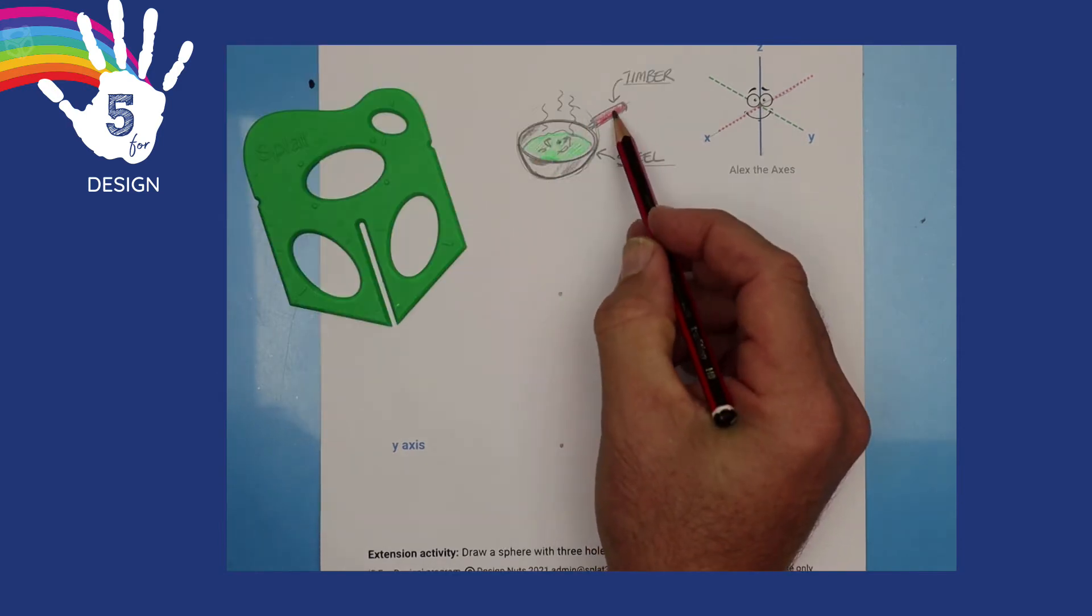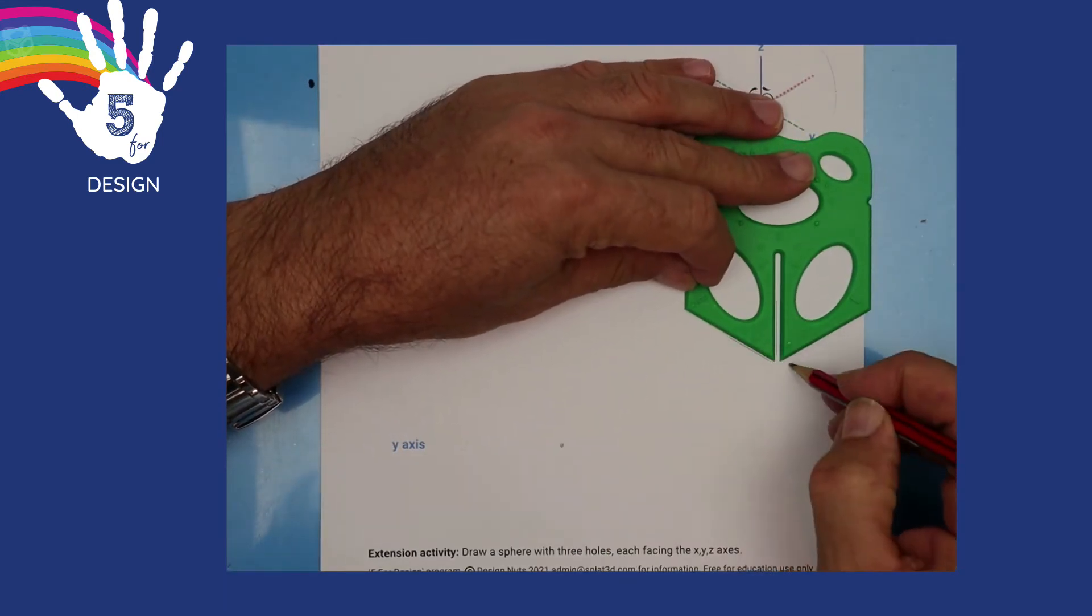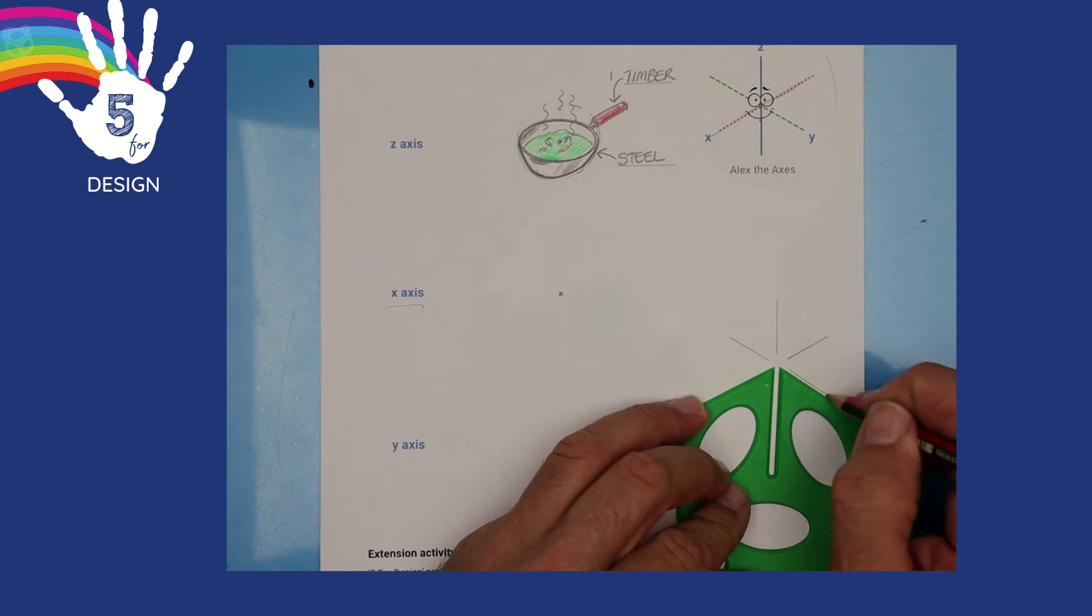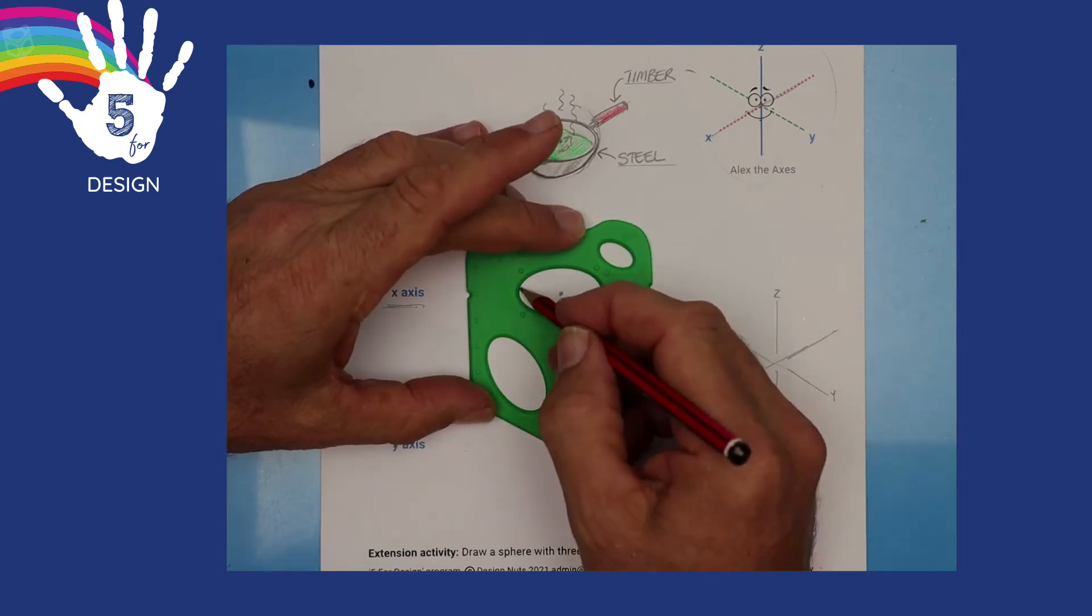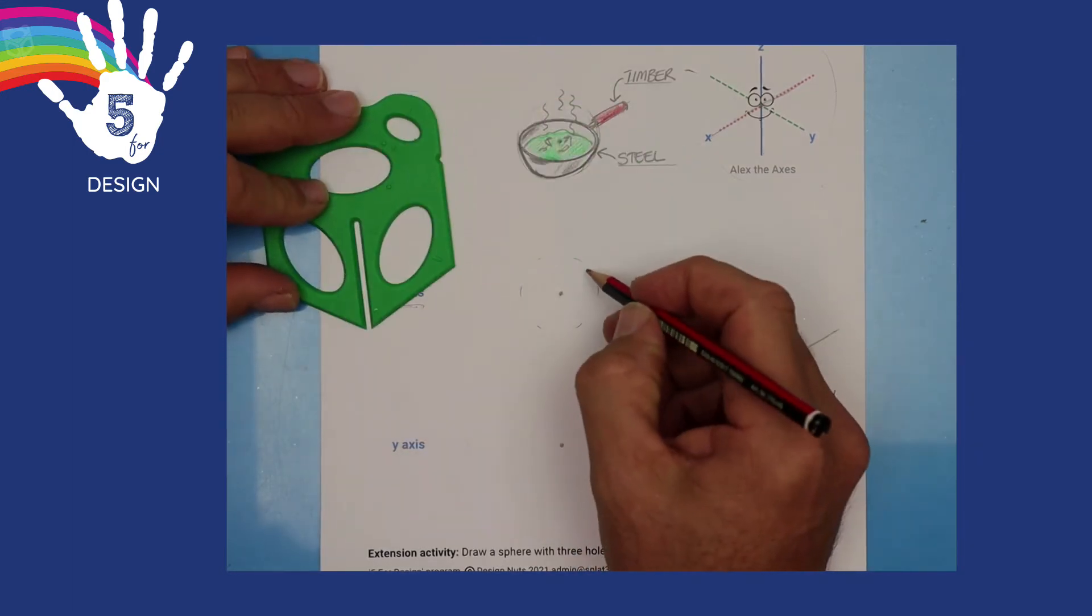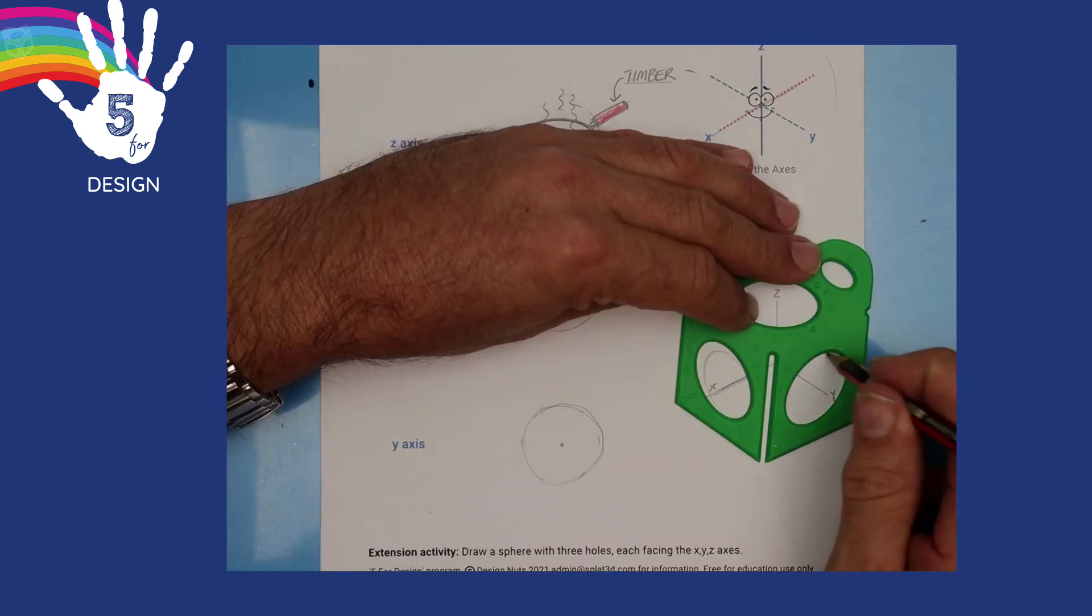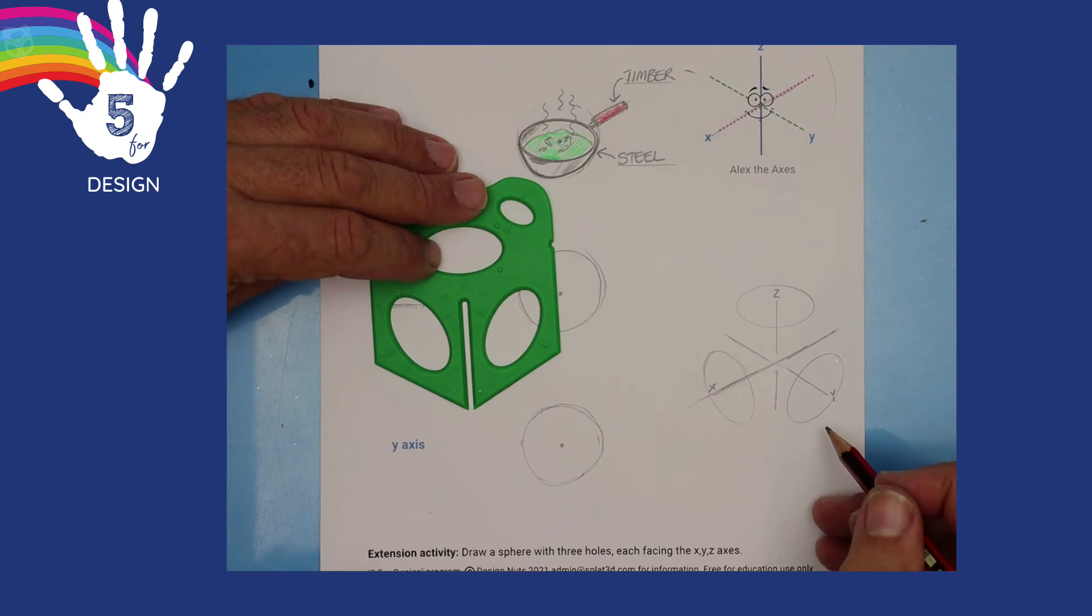Could be steel. Could be timber. Marky materials. You can draw your own Alex the axis with a bird's foot. And then upside down another bird's foot. And those are your three axis X, Y, Z. Let's quickly draw two more spheres that we can slice up as well. The ellipses on the splat are already set to slice on those three axes.